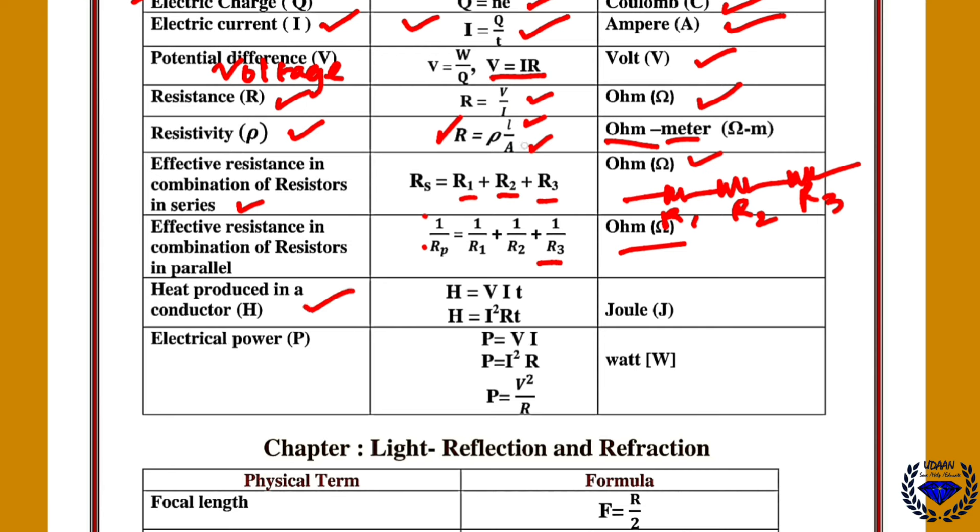Then heat produced in the conductor H is equal to V into I into T. Here H, actually the formula is heat energy is equal to power into time. So power is V into I into T. So here again H is equal to I square RT. This is Joule's law of heating.